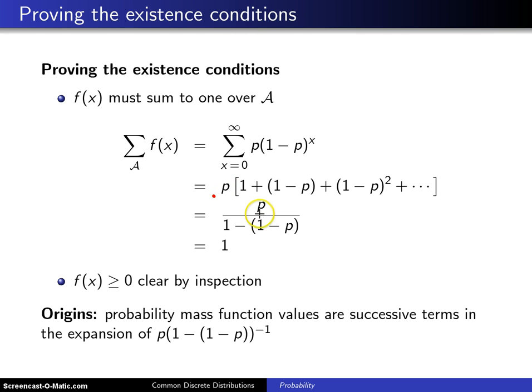So this p, of course, appears in the numerator. 1 minus 1 minus p is just p, so p divided by p is 1, and you've proven the hard part of the existence conditions.